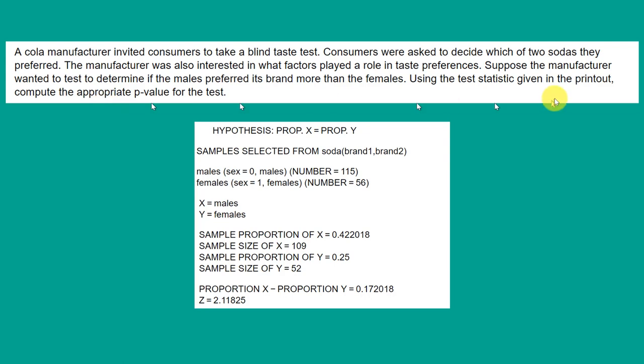They give you a clue: using the test statistic. We look down at the very bottom, and it gives us a Z value of 2.11825. That's our test statistic, or some people call it the standardized test statistic.